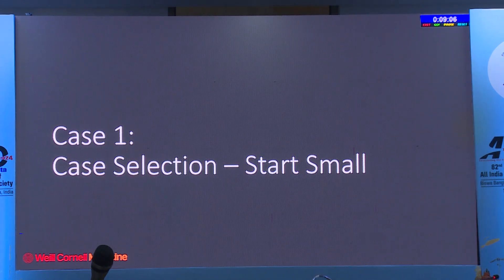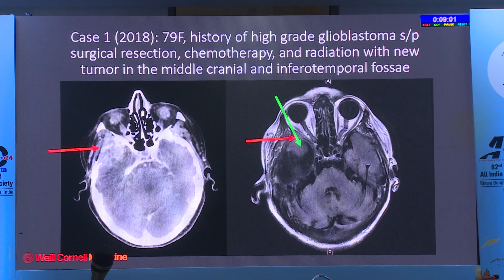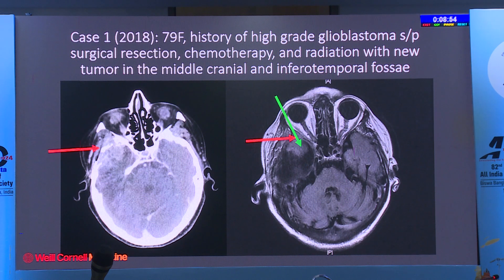When moving into these cases, it's important to build a team, collaborate with your neurosurgery colleagues, and start with appropriate cases. My first case with neurosurgeon Ted Schwartz was when I was a fellow—a 79-year-old woman with recurrent glioblastoma needing a diagnostic biopsy.